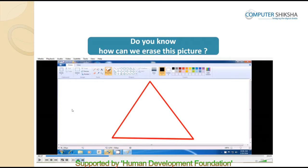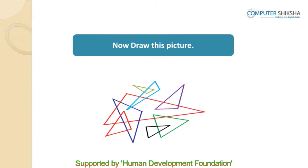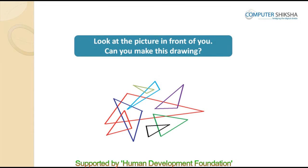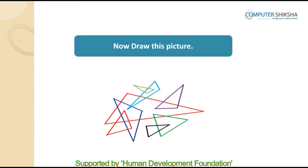Do you know how to delete or erase this picture? Delete or remove this picture as you have learned previously. In the next picture, we have many triangles and all the students need to carefully look at the picture and then make the drawings. To make this drawing, the first thing we will do is select the line tool and select a color, and then all of you will make all these pictures one by one.